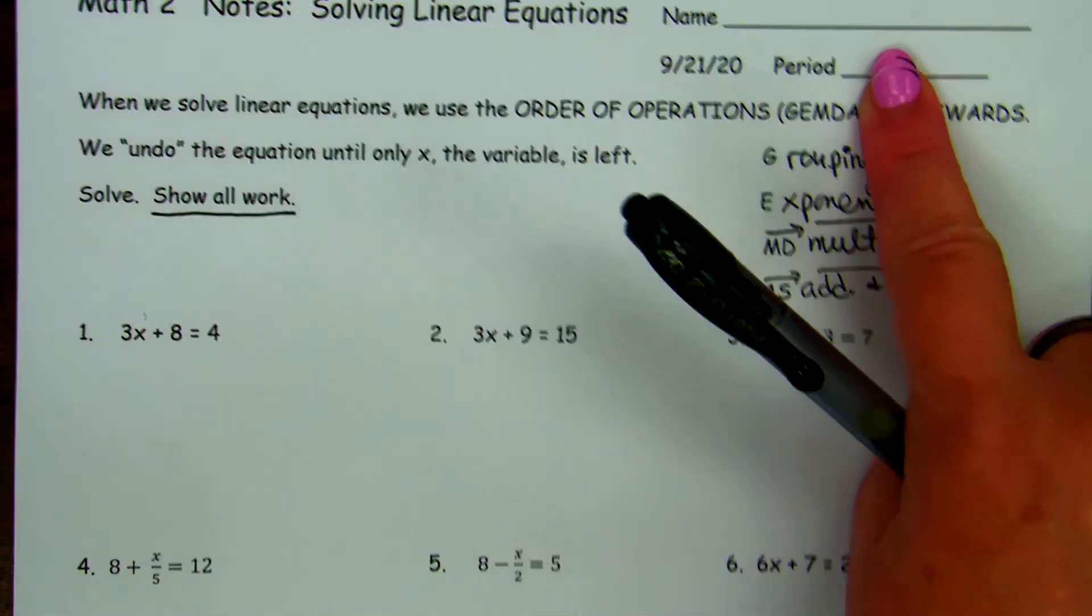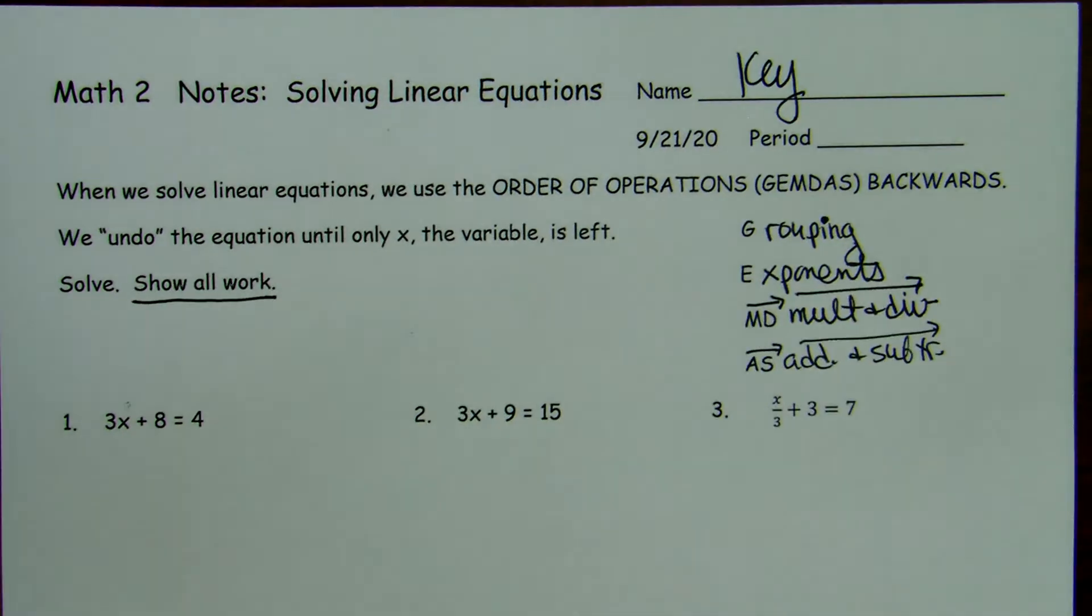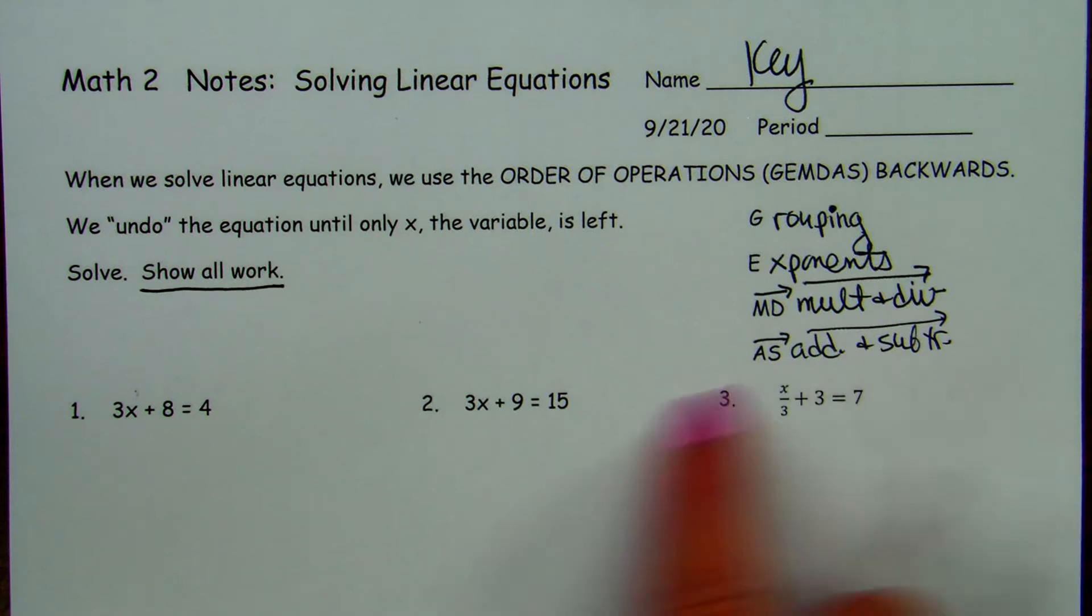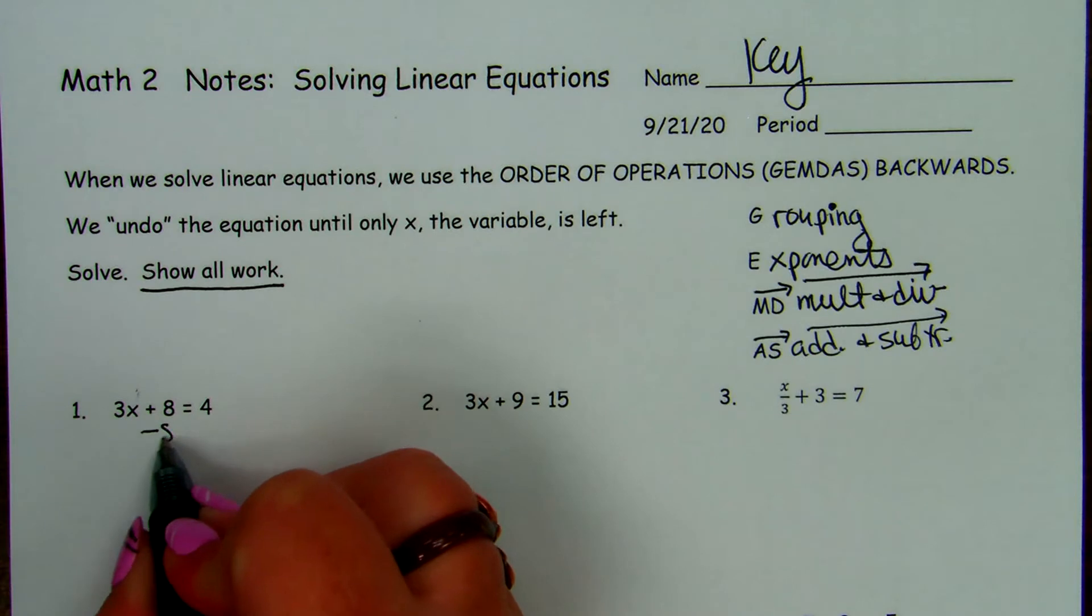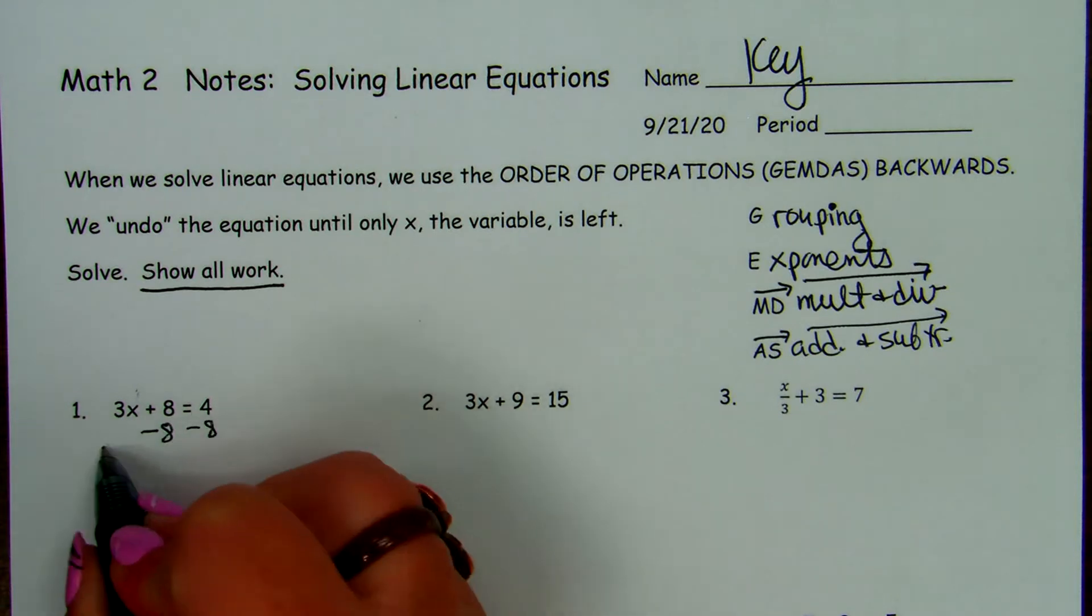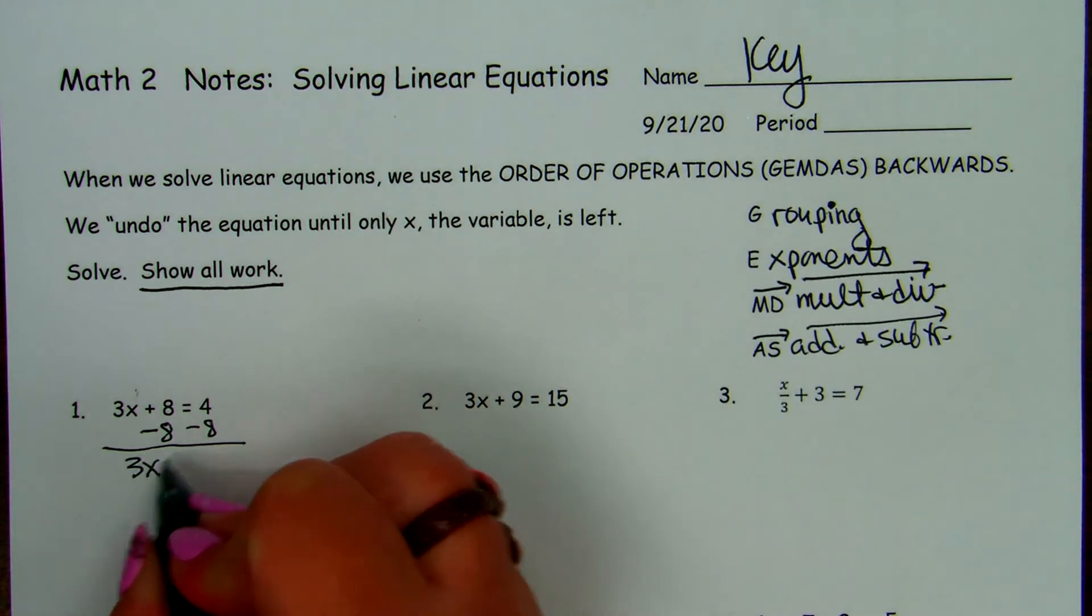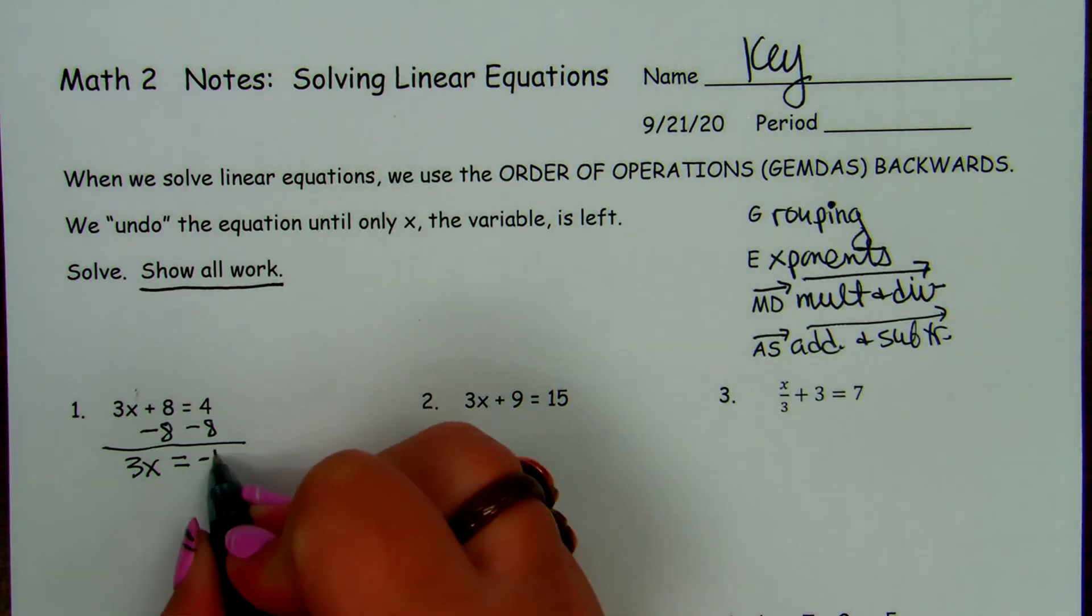You'll see what I mean when we get to problem number one. Make sure you write your name and what period you're in. So 3x plus 8 equals 4. We're going to do addition or subtraction first. So how do we get rid of a positive 8? You do the opposite. You subtract 8. That's at the bottom of GEMDAS. So 3x equals, and what do we get? Negative 4.